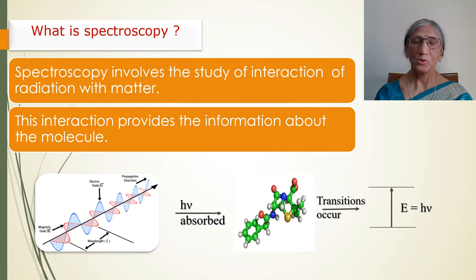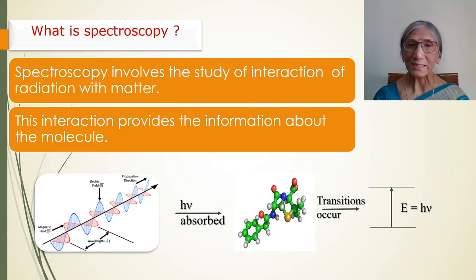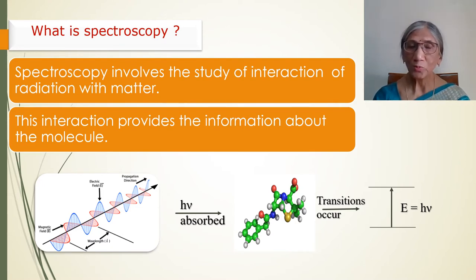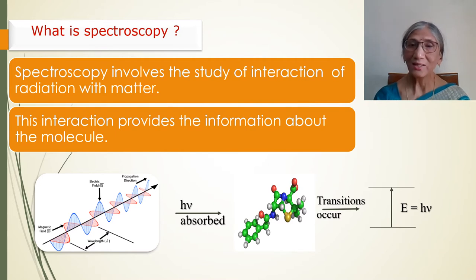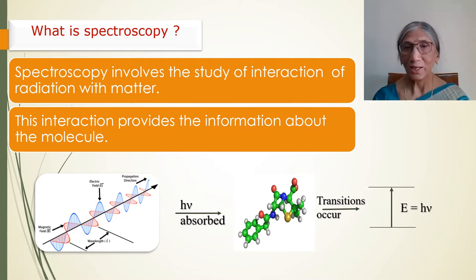In this manner, he showed that white light consists of seven colors and it is not the prism which is providing color to the light. This is the first scientific study of spectroscopy. Spectroscopy involves the study of interaction of matter with electromagnetic radiation. When matter is irradiated with electromagnetic radiation, it shows absorption of appropriate electromagnetic radiation, and the energy taken up is used for different types of transitions. The study of these transitions gives us information regarding the structure of the molecule and other characteristics.